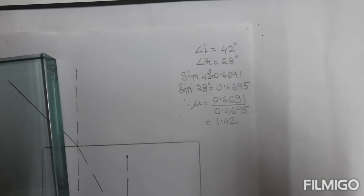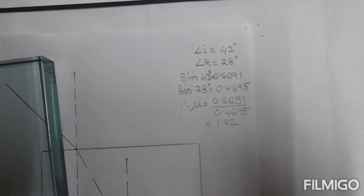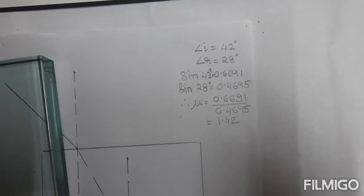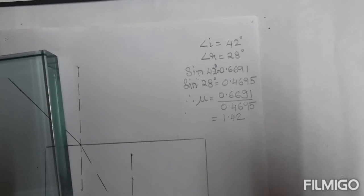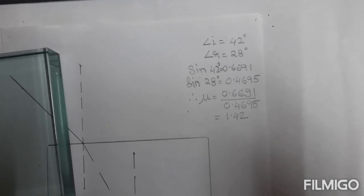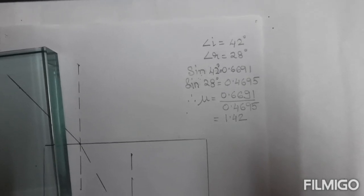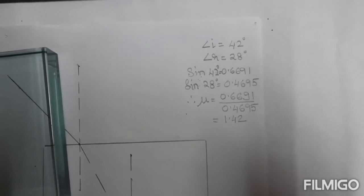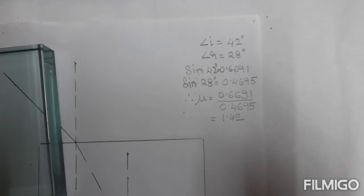So we find angle of incidence is 42 degrees, angle of refraction is 28 degrees. Therefore sine I, that is sine 42, is 0.6691. We can find this from the tables that are given at the back of your maths books. Next we can divide and find out the refractive index which comes to 1.42.